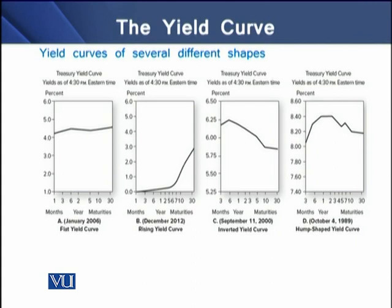We have different shapes of yield curves. In panel A the curve is relatively flat. In panel B the curve is rising upward, so it is an upward-sloping yield curve. In panel C the yield curve is inverted, sloping downward. And in panel D the yield curve is hump-shaped.